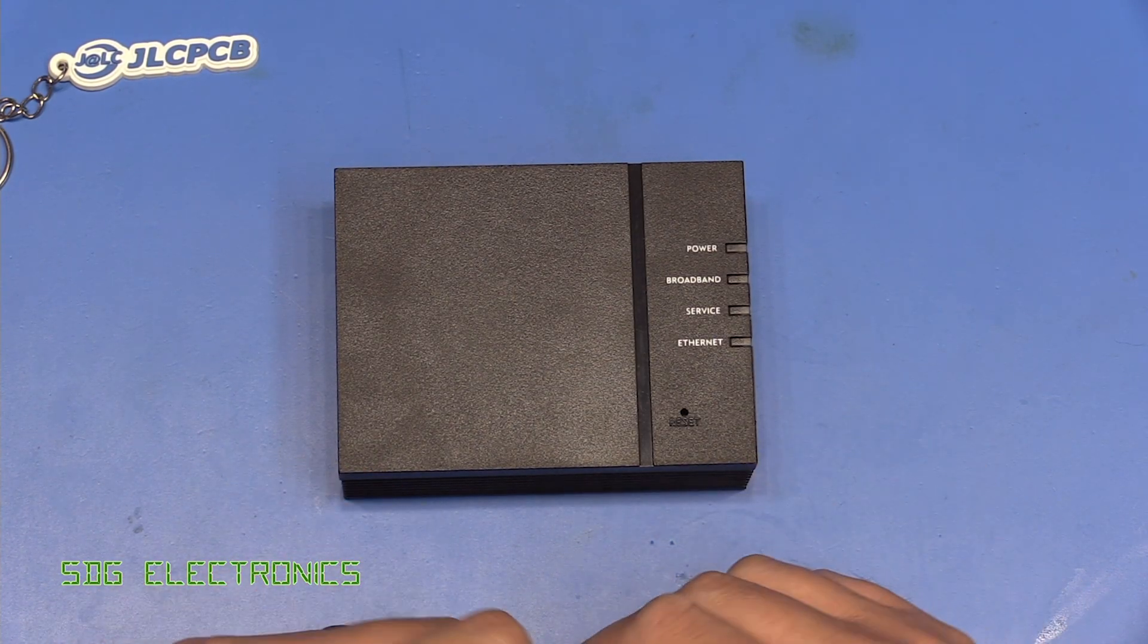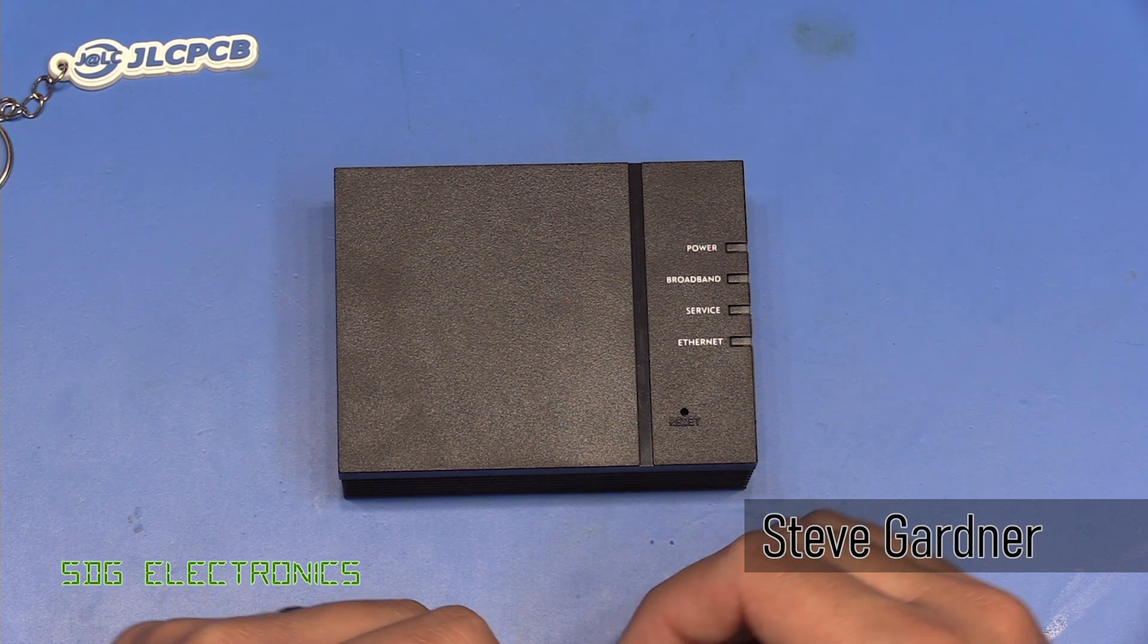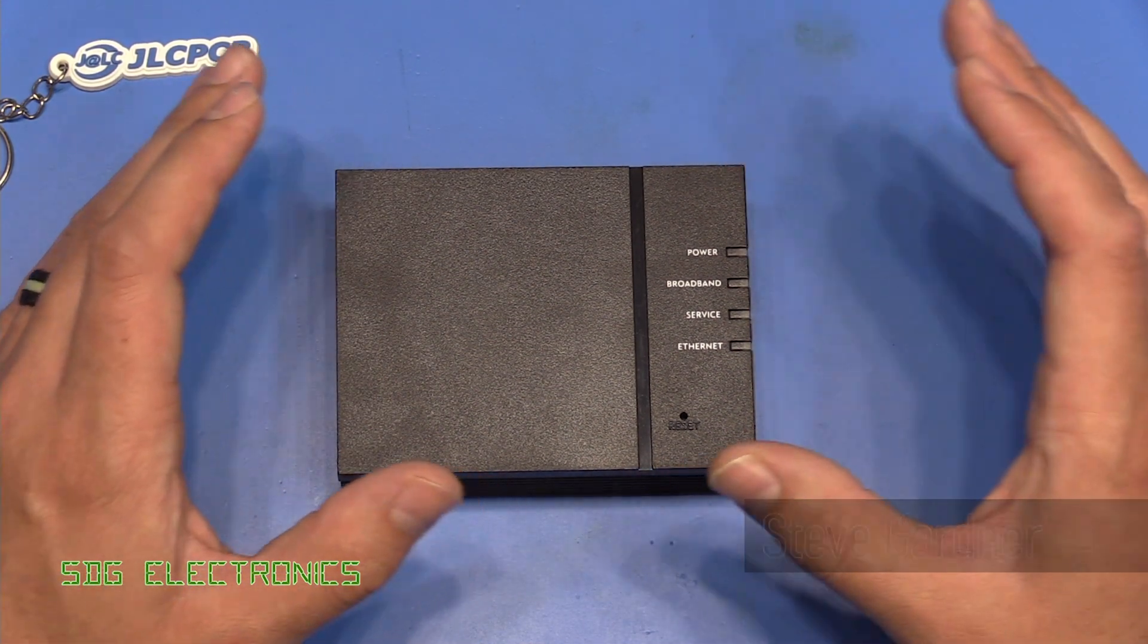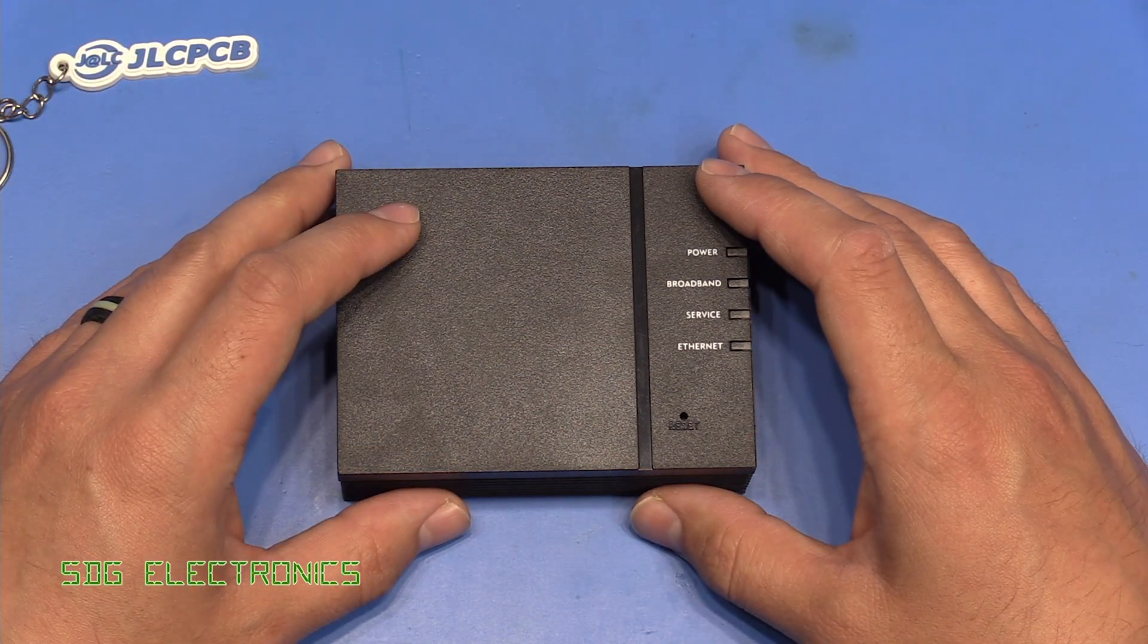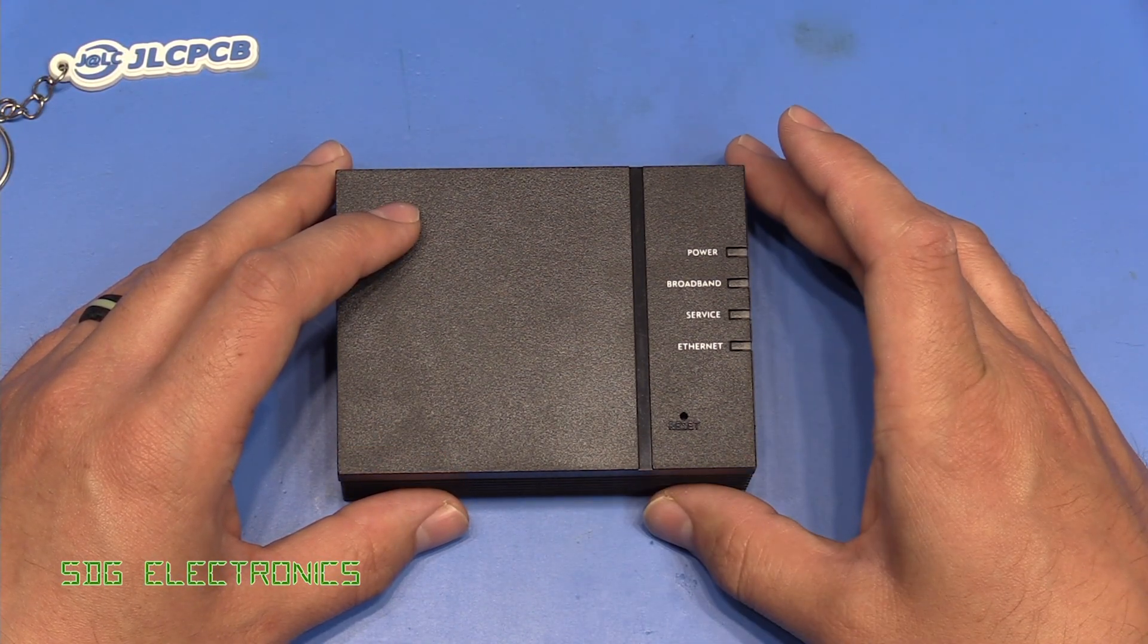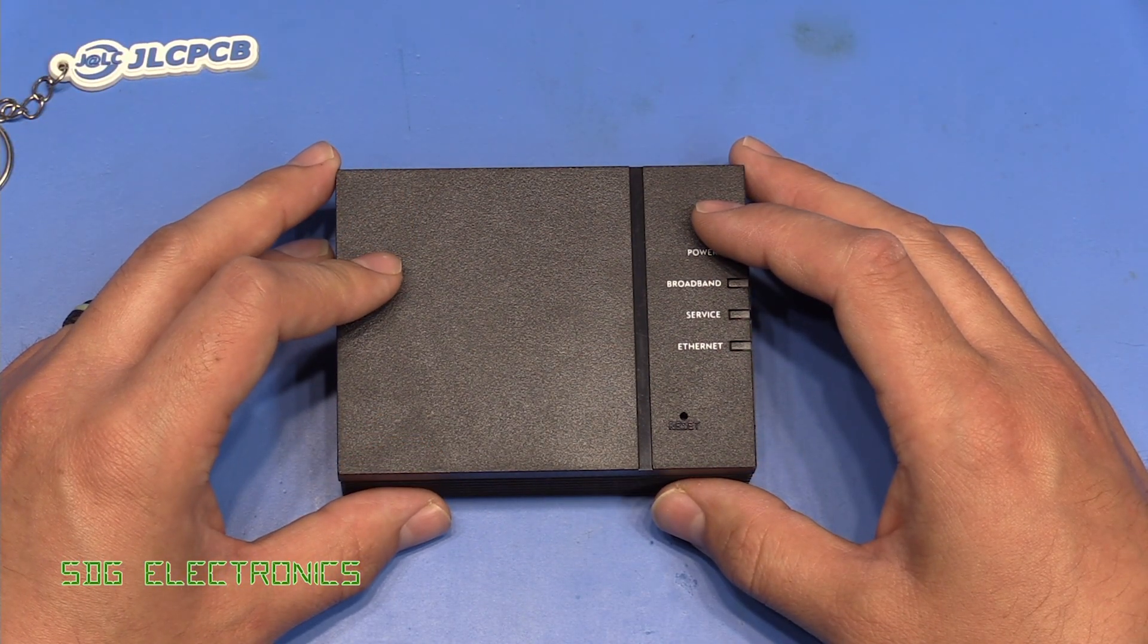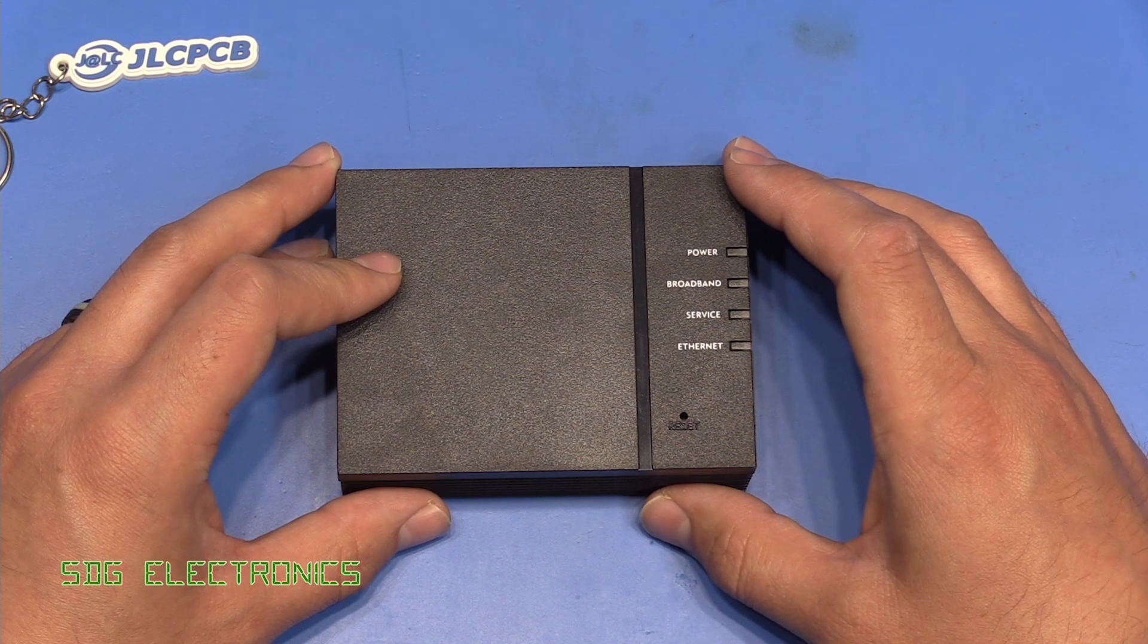Hi. I thought I'd do an update on where I am with the Vodafone Gigafast internet connection. For those of you that didn't watch the earlier video, I have subscribed to Vodafone's Gigafast connection using City Fibre's infrastructure. Basically what I'm supposed to be paying for is 900 megabits per second download and 900 megabits per second upload.